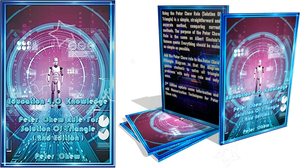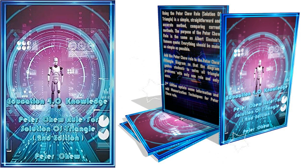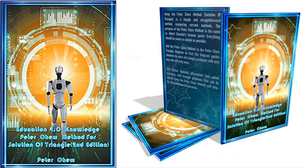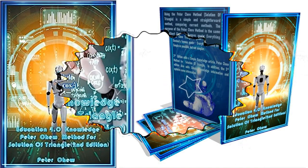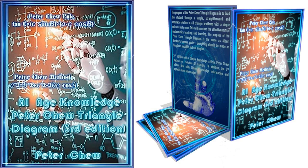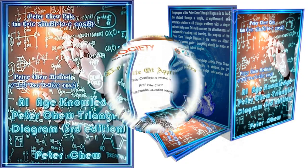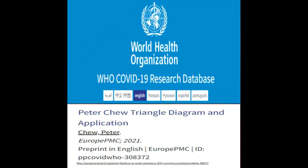For more details on the Peter Chu Rule for Solution of Triangle, please refer to Education 4.0 Knowledge: Peter Chu Rule for Solution of Triangle, 2nd Edition. For more details on the Peter Chu Method for Solution of Triangle, please refer to Education 4.0 Knowledge: Peter Chu Method for Solution of Triangle, 2nd Edition. For more details on the Peter Chu Triangle Diagram, please refer to AIH Knowledge: Peter Chu Triangle Diagram, 3rd Edition. Because the Peter Chu Triangle Diagram simplifies the way to solve problems, it is easy to learn, especially during a pandemic like COVID. The Peter Chu Triangle Diagram article preprint is shared at the World Health Organization.